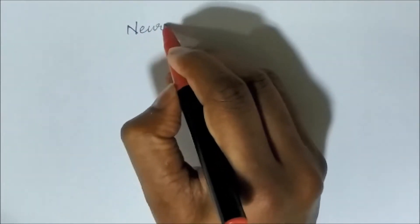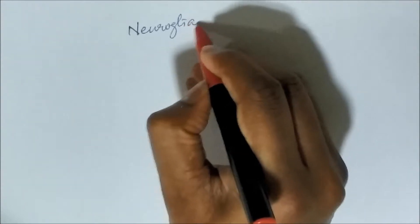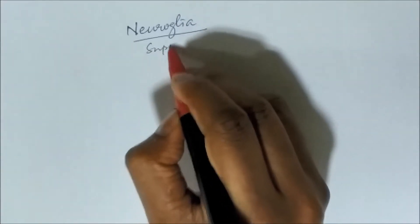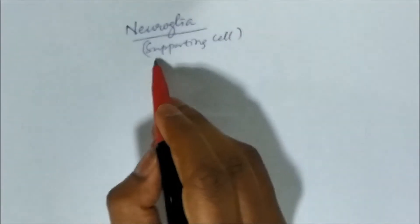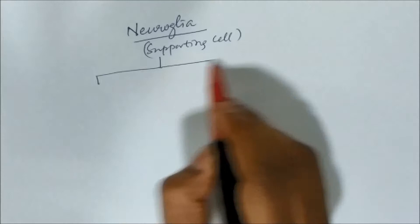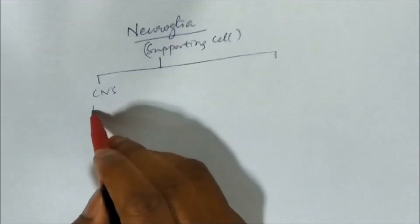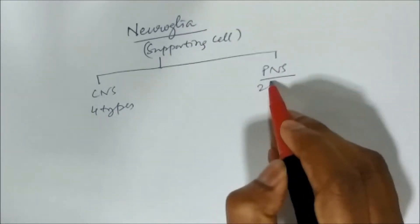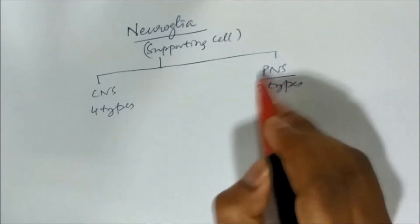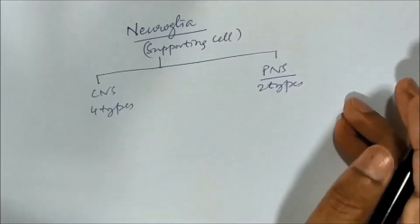Welcome friends. In the last class we discussed the main cell of the nervous system, the neuron. Today we will discuss the supporting cell, neuroglia, the supporting cell of the nervous system. Neuroglia in the central nervous system is of four types, and in the peripheral nervous system it is of two types, including the autonomic nervous system and somatic nervous system.